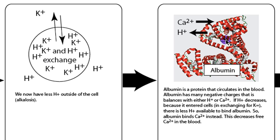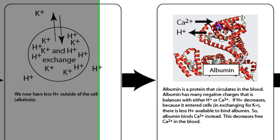But albumin's very negatively charged, and it usually balances those negative charges with hydrogen and calcium. Well, if we've just lost all of our hydrogen because it ran into the cell, then hydrogen's going to come off the albumin. That means there's going to be more room for calcium, so calcium's going to jump onto the albumin, and now we've got hypocalcemia. We've got too low of calcium.